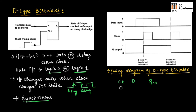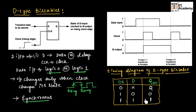If the clock signal is 0, irrespective of what we have at the input of the D flip-flop, the output will be in the previous state — whatever data was stored in the previous state, we will get the same output. Here, Q(n+1) represents the next state when we apply the clock, and Q represents the previous state. If the previous data was 0, output will be 0; if the previous data was 1, output will be 1 when clock is 0. When clock is high and input is 0, output will be 0. If clock is high and input is 1, output will be 1. This is how the D type bistable operates.